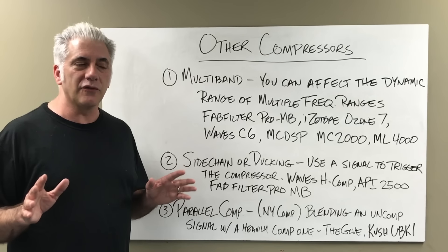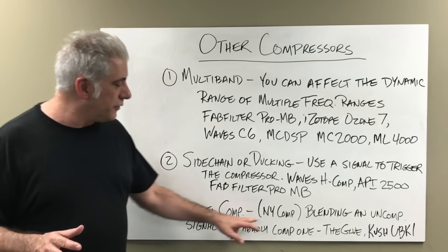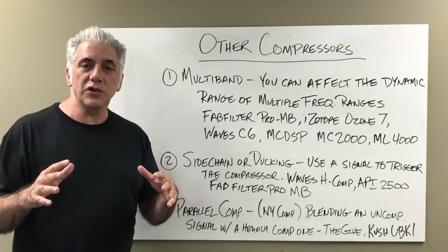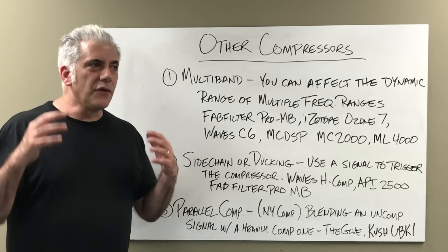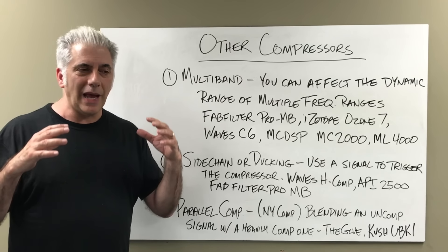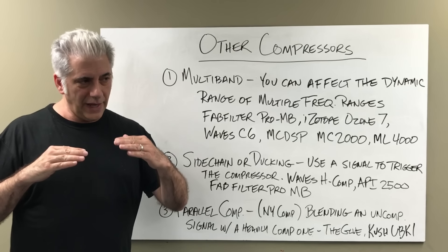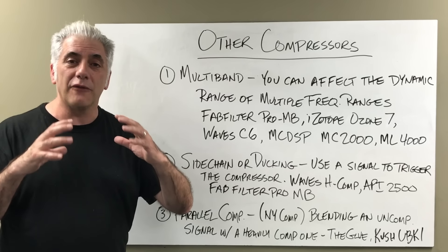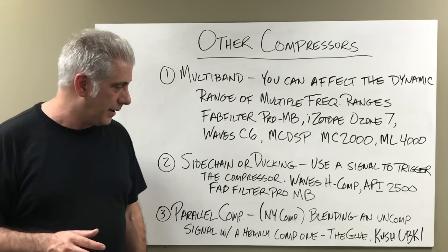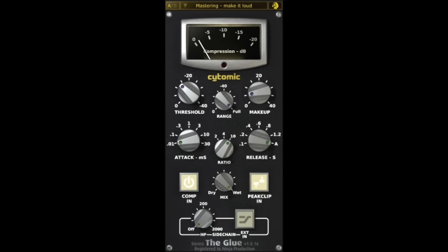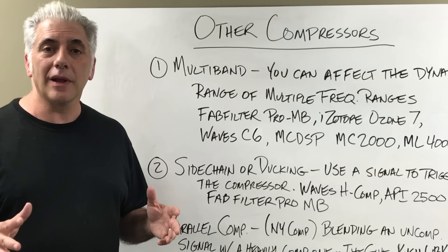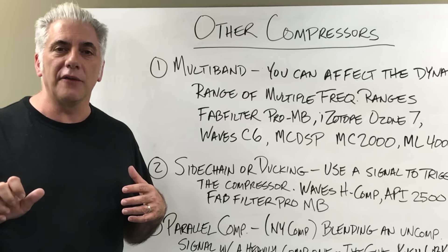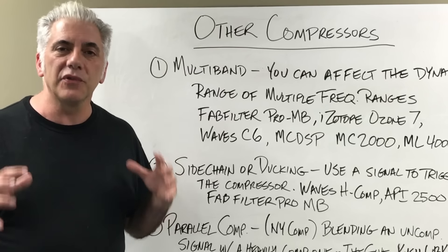The last thing here is parallel compression. Most compressors now have mix knobs on them — they call it New York style compression. It's basically blending an uncompressed sound with a heavily compressed sound. I love parallel compression on all different instruments, especially vocals. If you have a vocal that's not quite sitting in the mix and sometimes gets buried, the parallel compression track fills it in and makes it sound way fatter. Most compressors in plugin form today have a mix knob. One of my favorites is The Glue — kind of an emulation of an SSL compressor. I love using it on my drum bus. Using that mix knob, you can really compress it but back it off so you don't hear the pumping, yet it makes the drums way tighter and more solid.